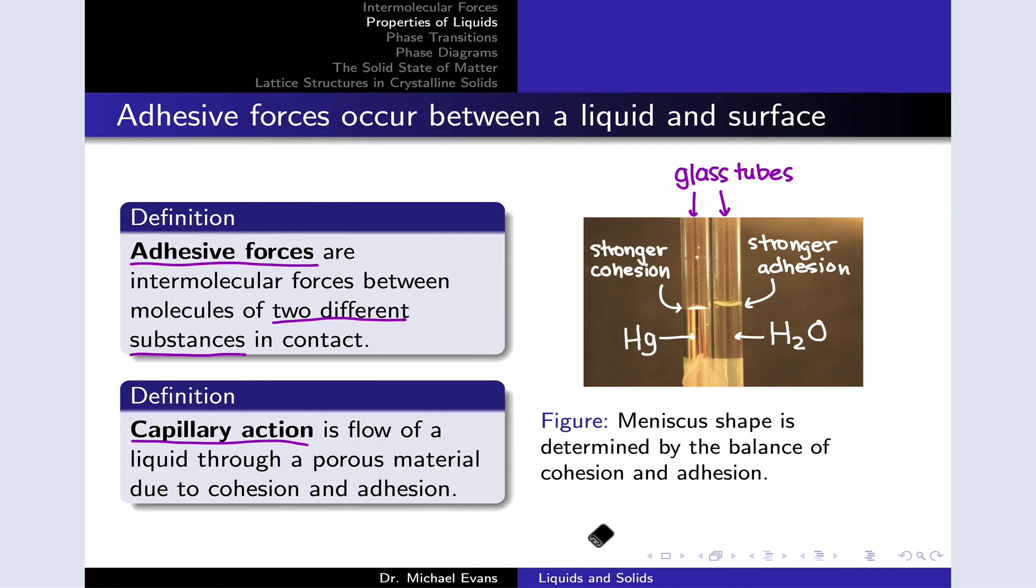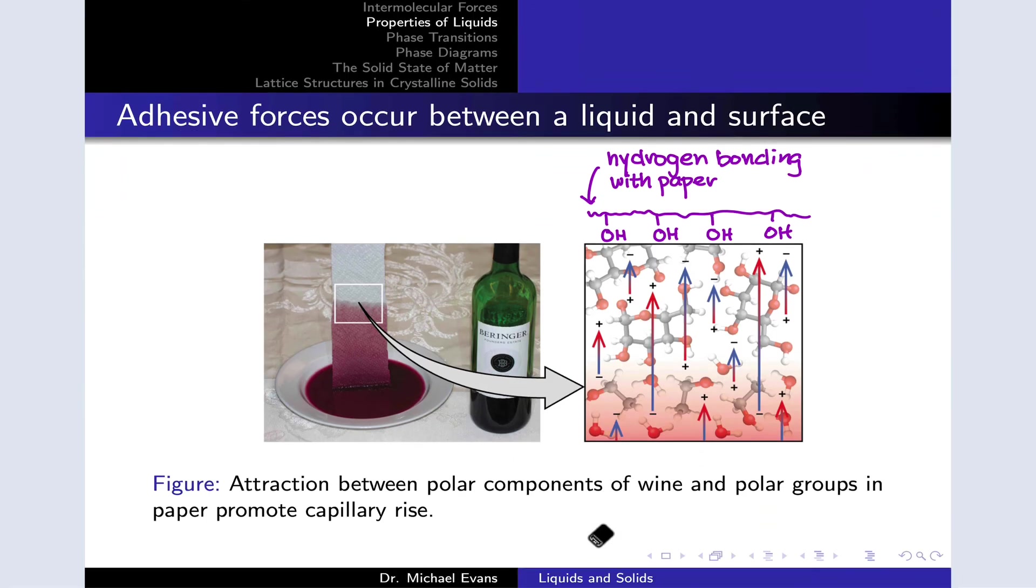This is due to a combination of adhesion, which pulls the molecules along the surface, and cohesion, which causes the molecules at the front of the moving liquid to pull molecules behind up onto the surface or up through the tube.